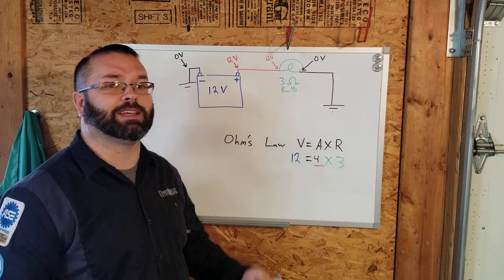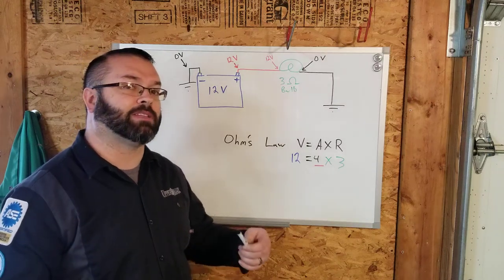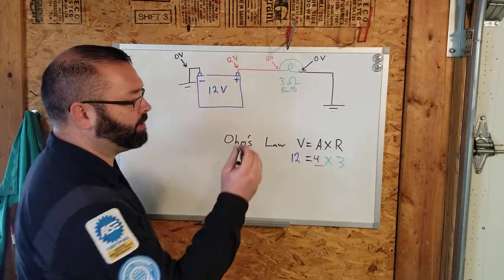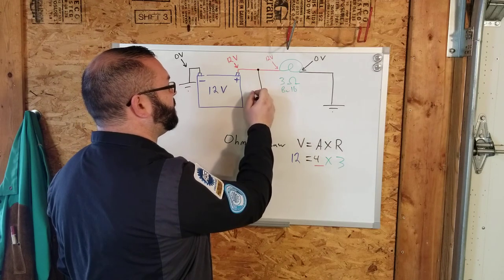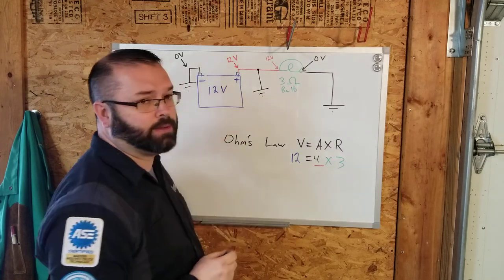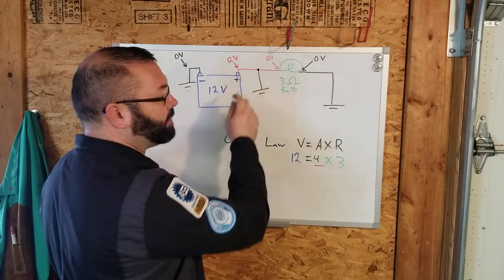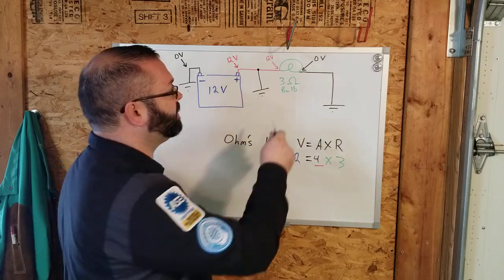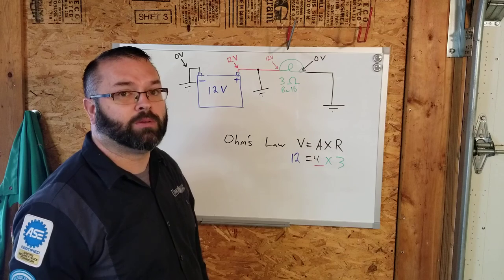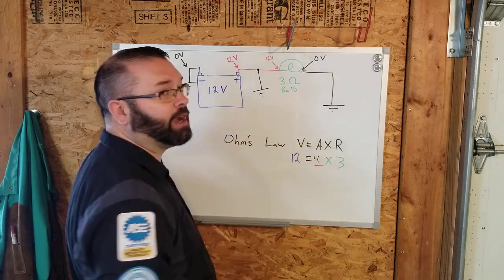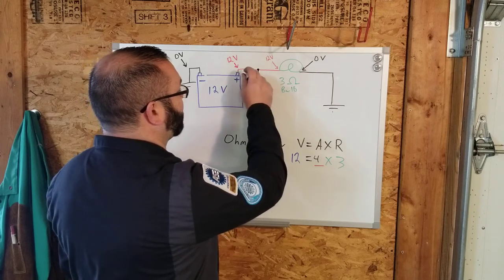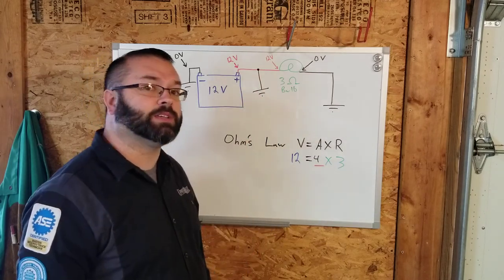We would have four amps of flow through our conductor. Something about electricity. Electricity is lazy. It always likes the path of least resistance. So, if for some reason, let's say I attach a wire here and I run it directly to ground, very little resistance in that conductor going to ground. There's three Ohms of resistance in that bulb. Which way do you think it wants to go? It's going to go straight to ground.